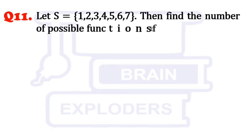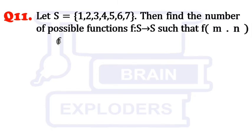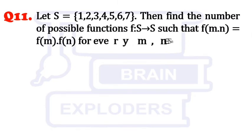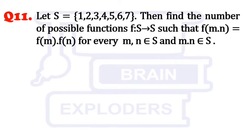Let S be the set of the first 7 natural numbers. Find the number of possible functions f defined from S to S such that f(m·n) = f(m)·f(n) for every m, n belonging to S where m·n also belongs to S.